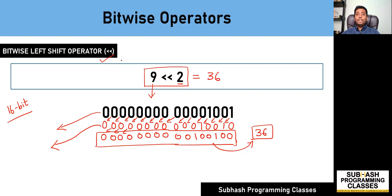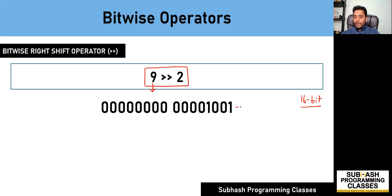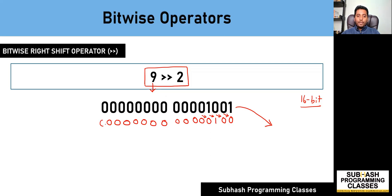Now let's see how the right shift operator works. We have the expression 9 right shift of 2. Again, whenever we are making use of bitwise operators, we have to represent those numbers in binary format — using 16-bit binary format. So let me start moving the bits of number 9 towards the right two times. The first time I shift towards the right, the least significant bit falls off and each bit moves one position to the right, with the leftmost empty position filled with a 0. This is the result after shifting once.